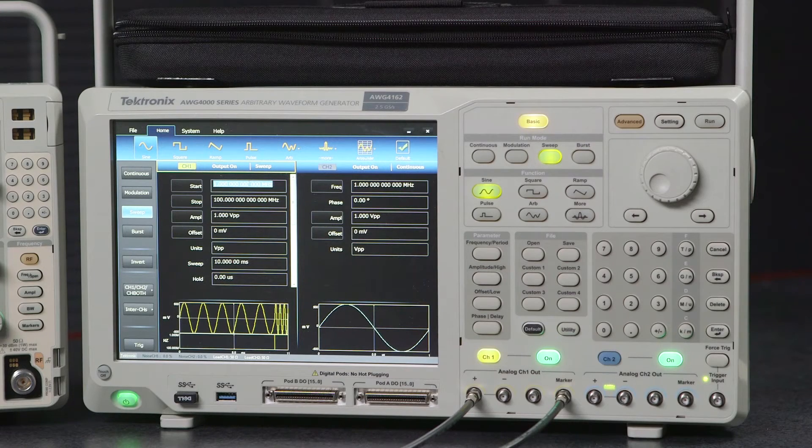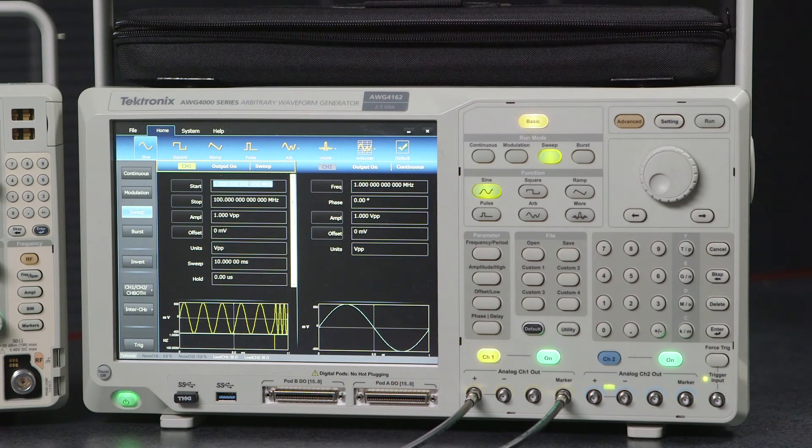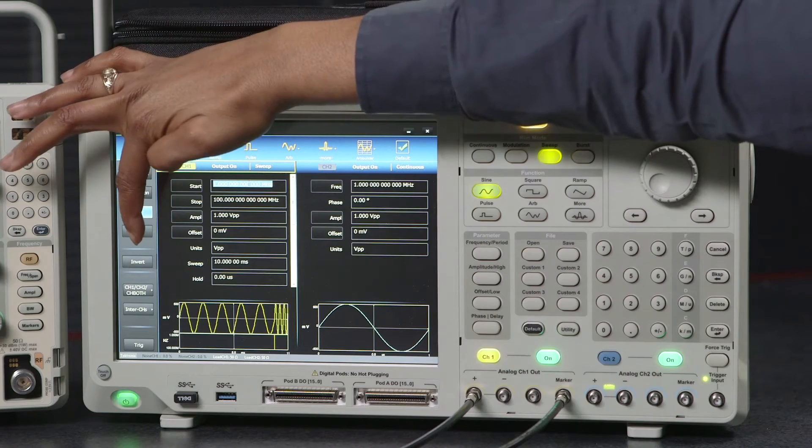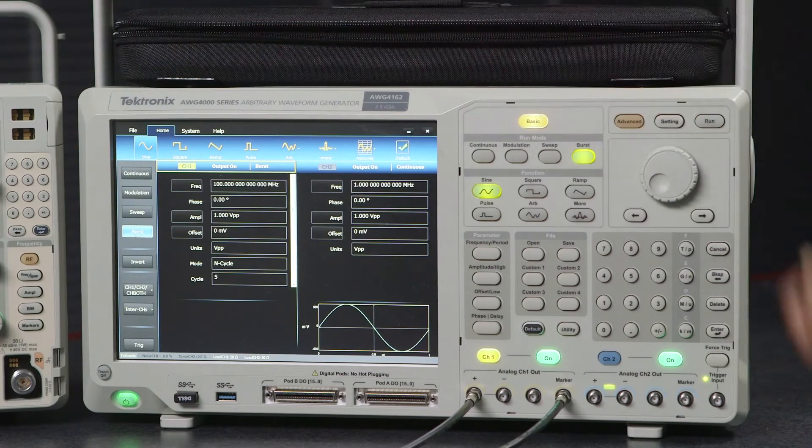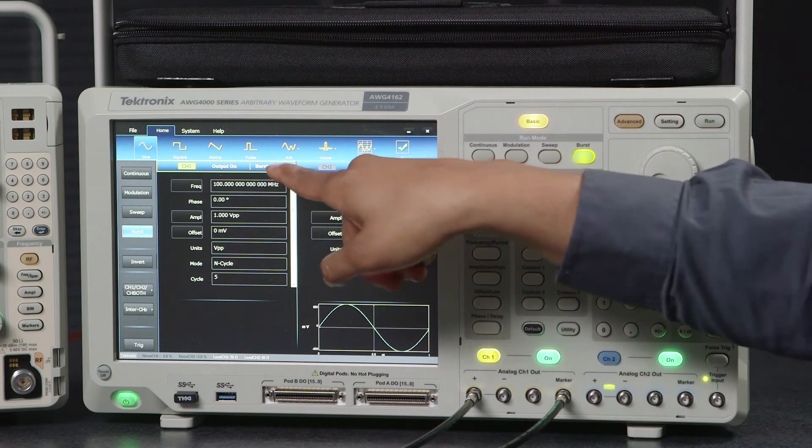The next user generated waveform we're going to create is a burst waveform. We select burst from our list here. As you can see we can change the settings for frequency.